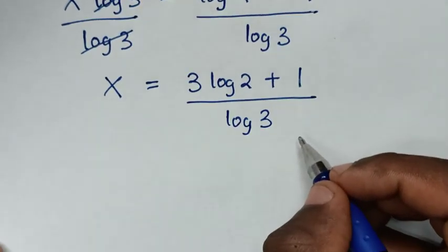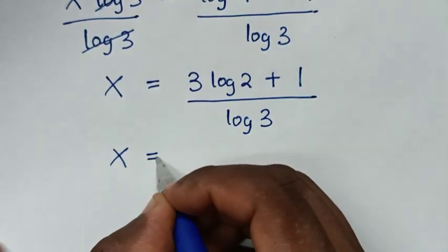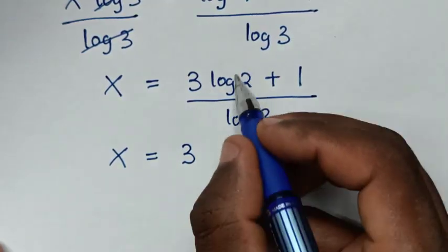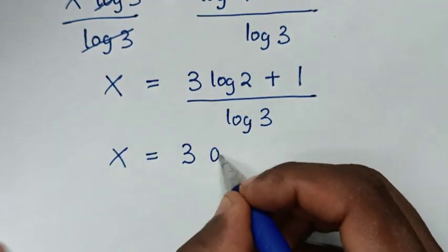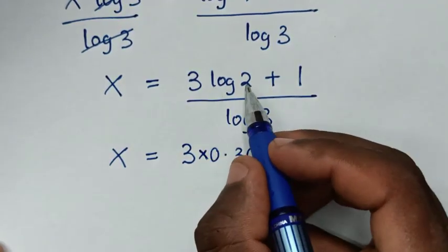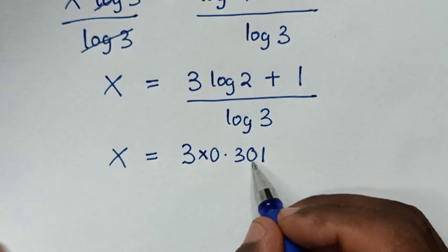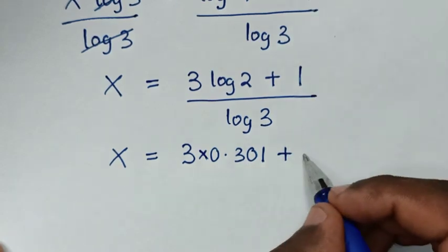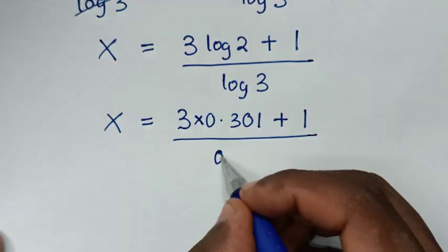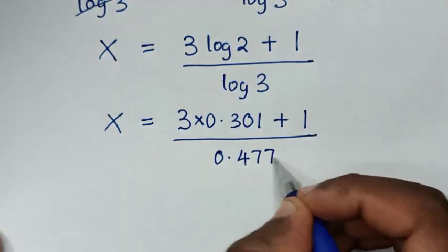Then it will be x is equal to 3 log of 2. Log of 2 is 0.301, so it will be 3 times 0.301, plus 1, over log of 3, which is 0.4771.